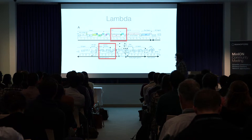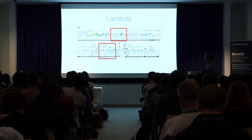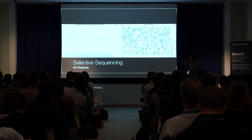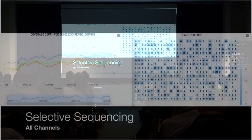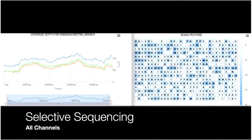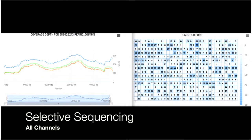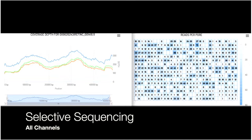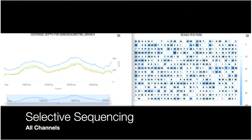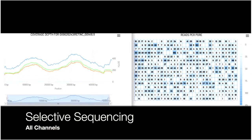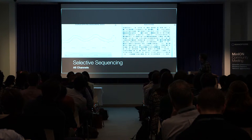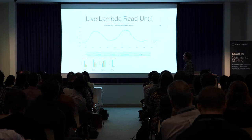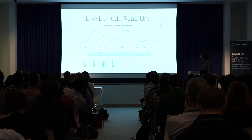We decided to start easy with Lambda, choosing just two 5kb regions that we wanted to sequence. The plots on the left show blue for template, orange for complement, and yellow for 2D — this is sped up. You can see two peaks starting to emerge from this library — from 10 to 15kb and 30 to 35kb. These were the two regions we were selecting when running Read Until, and they're starting to grow really nicely.